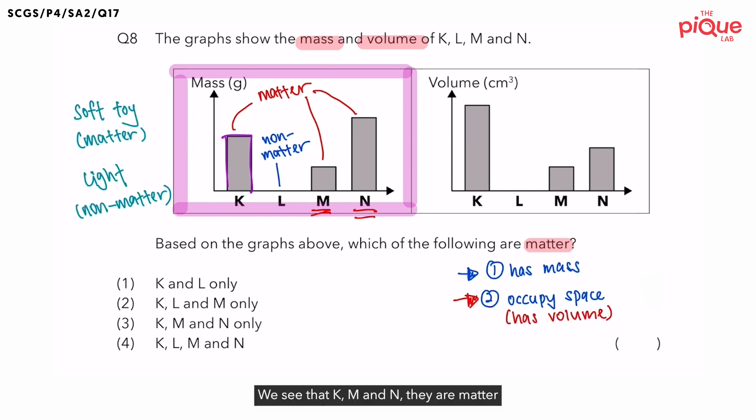We said that K, M and N, they are matter based on the mass graph. So do you think K, M and N, they will also need to occupy space? The answer is yes. So if they need to occupy space, will they also have volume? Yes. So let's check the volume graph. Does K, M and N have volume?